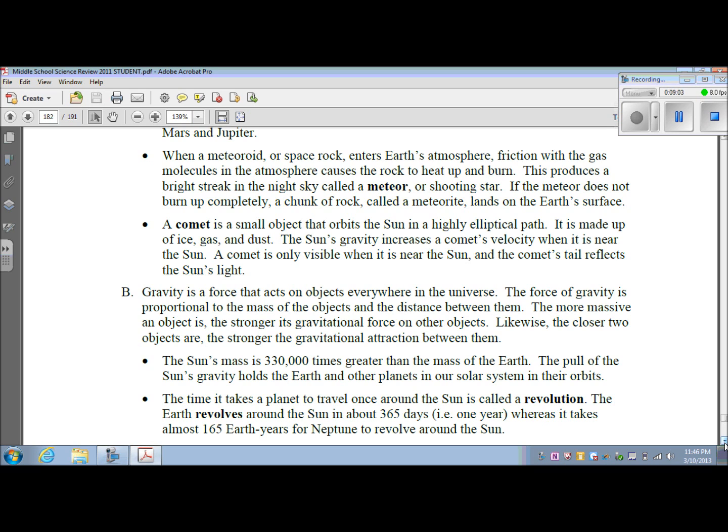A comet is a small object that orbits the Sun in a highly elliptical path. It is made up of ice, gas, and dust. The Sun's gravity increases a comet's velocity when it is near the Sun. A comet is only visible when it is near the Sun, and the comet's tail reflects the Sun's light.